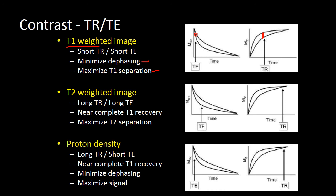With a T2-weighted image, we're going to have a very long TR so all the tissue recovers its longitudinal magnetization and can be excited with our RF pulse to create transverse magnetization. We then pick a TE that maximizes the dephasing differences between tissue types, giving near complete T1 recovery and maximum dephasing separation to create a T2-weighted image. If we want to maximize overall signal intensity — as in MSK when looking at cartilage or menisci — we allow complete T1 recovery with a long TR and minimize dephasing with a short TE, creating a proton density sequence.